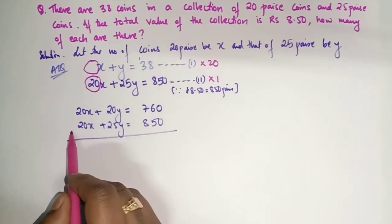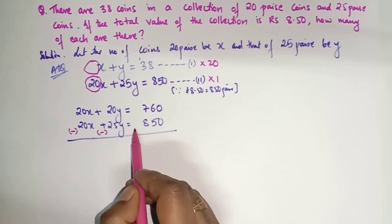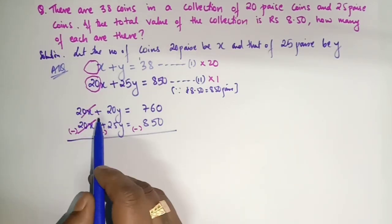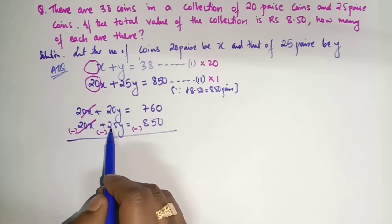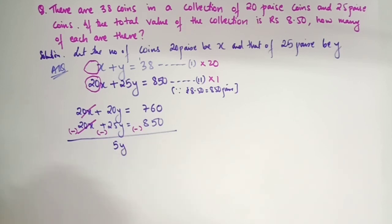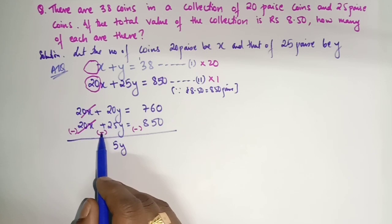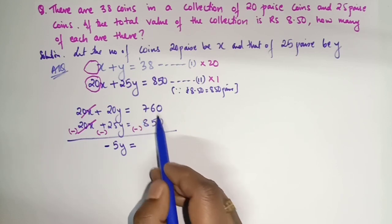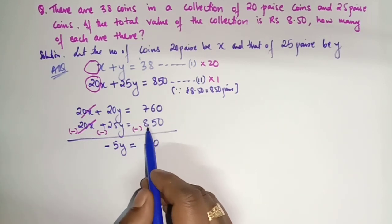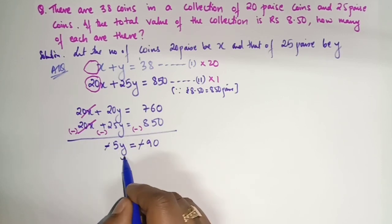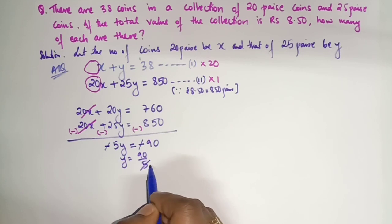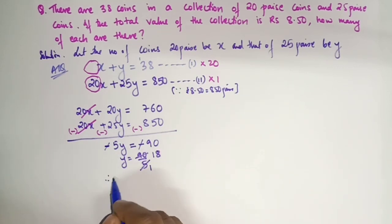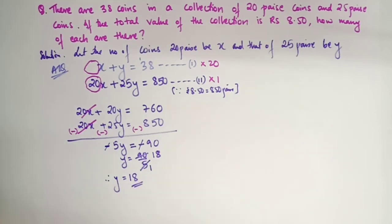After changing sign: 20x cancels. 25y − 20y = 5y. The sign is minus because 25 is bigger and its sign was changed. On the right side: 850 − 760 = 90. So −5y = −90. Minus minus cancels, so 5y = 90. Therefore y = 90 ÷ 5 = 18. So y = 18.